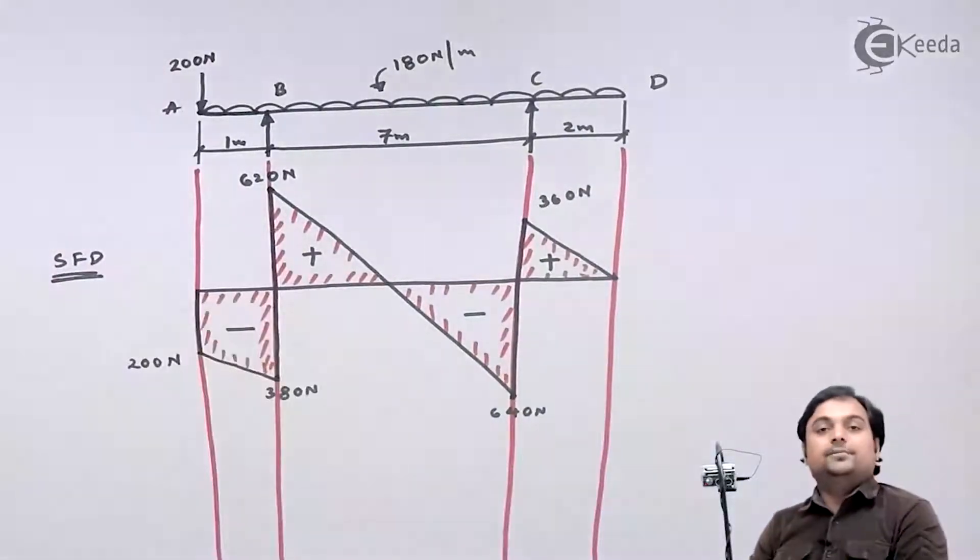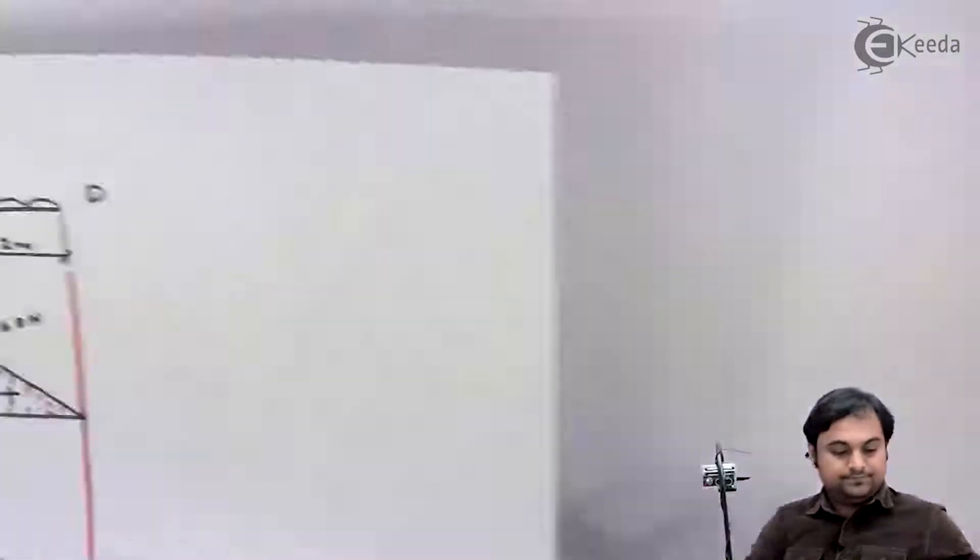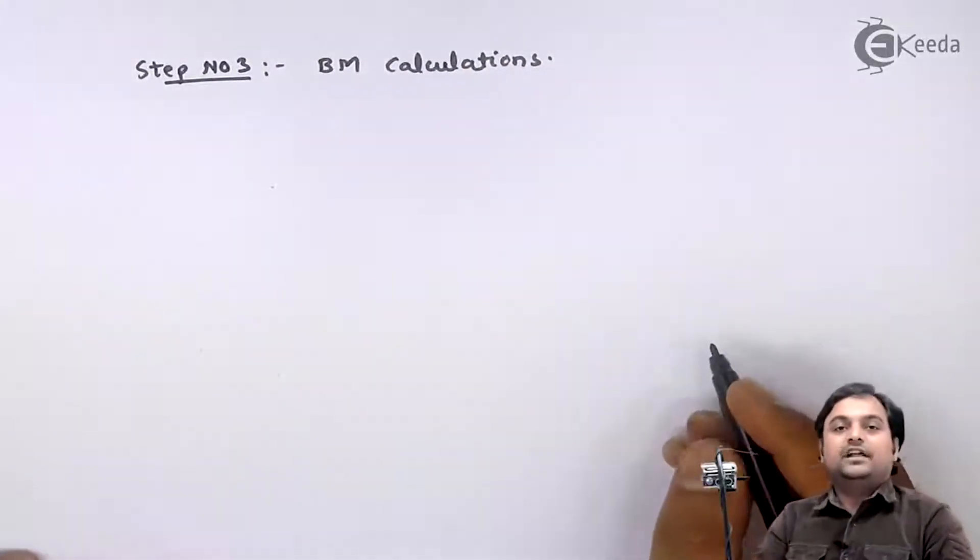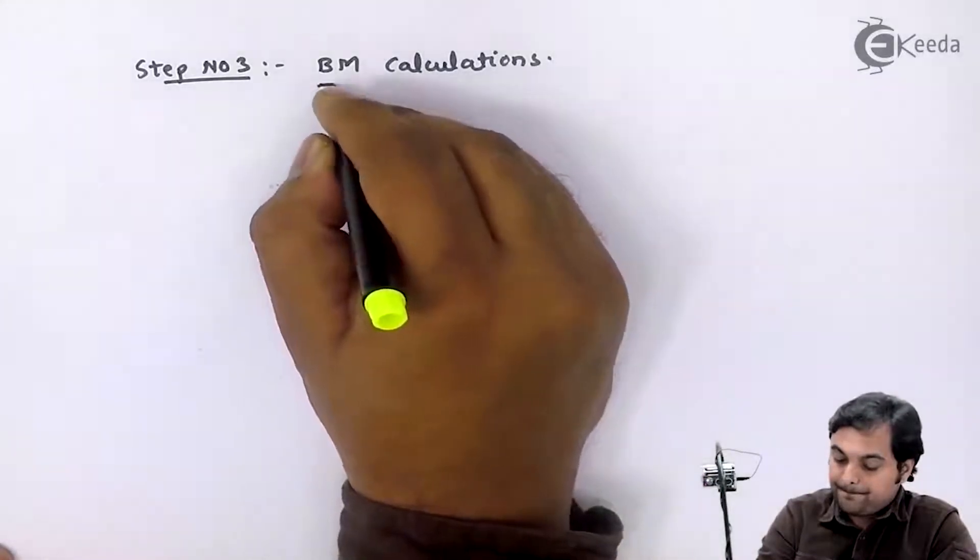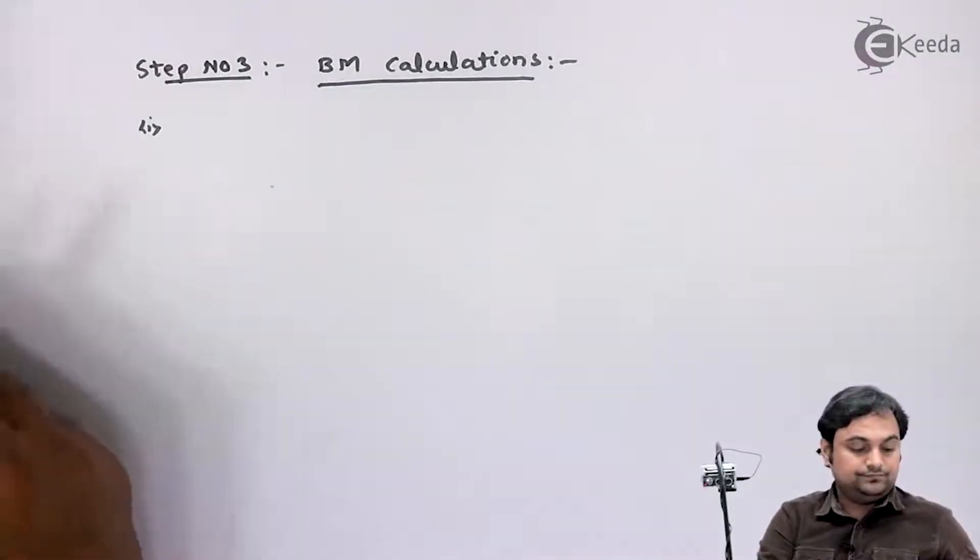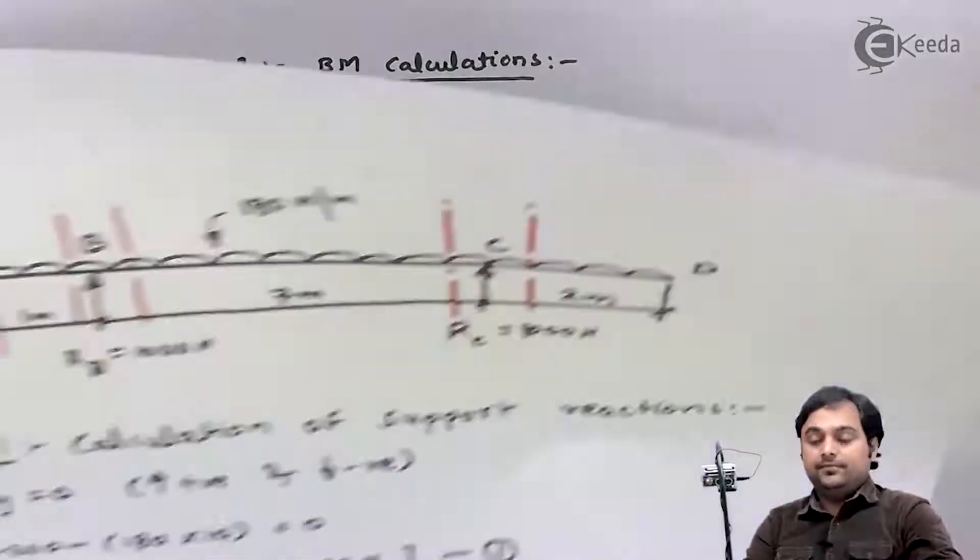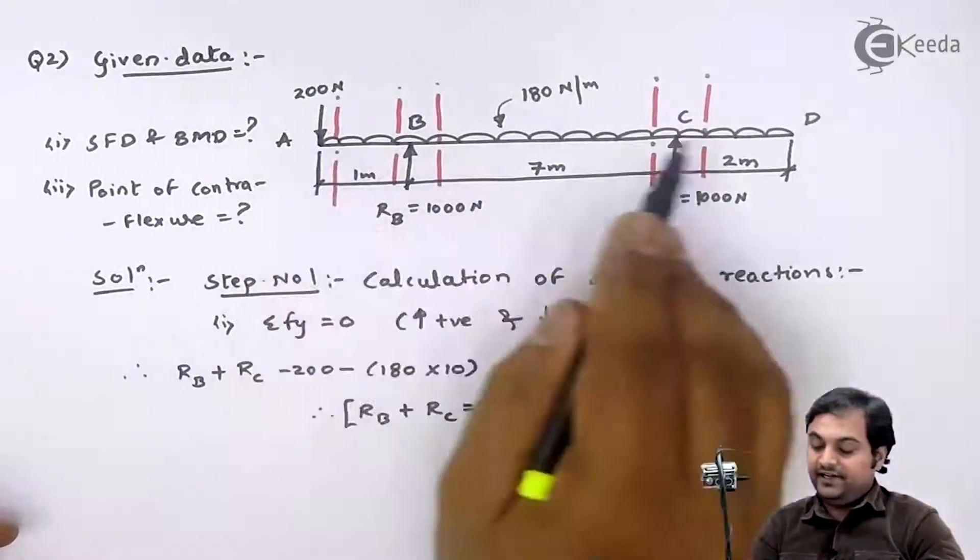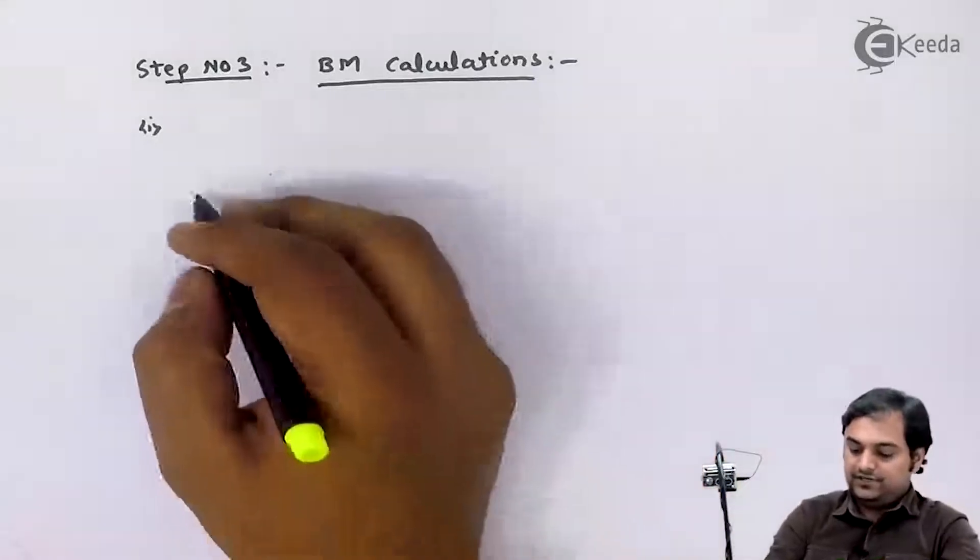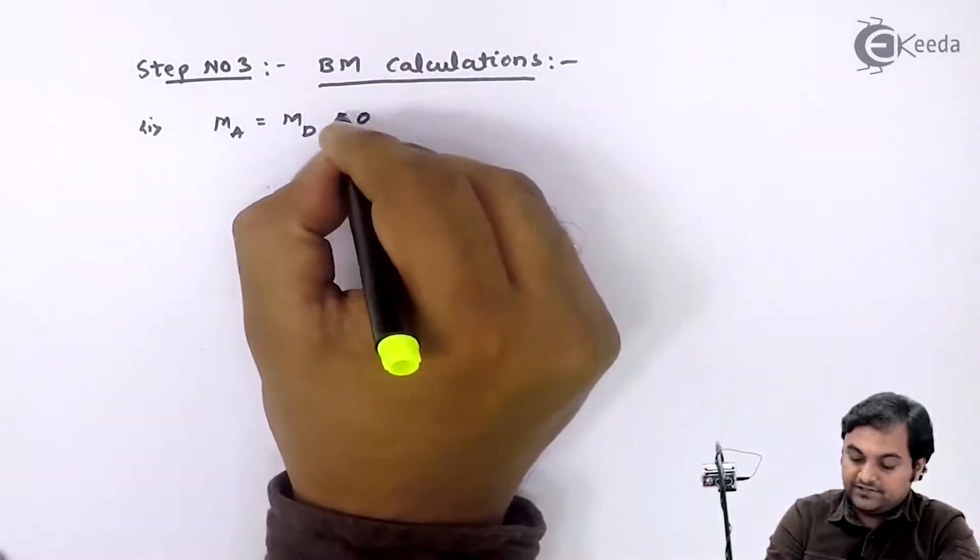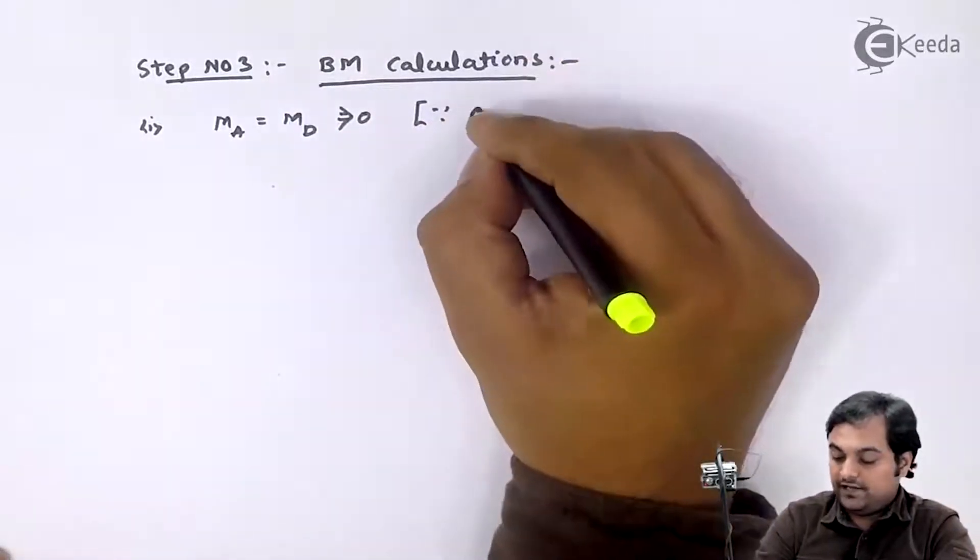Now after completing step number two, let us go on to step number three. Step number three is bending moment calculations. First, as we see here, the given beam is overhanging, so at the overhanging end A and D, bending moment will be zero. So first I'll write down moment at A equals moment at D, and that is zero, since overhanging beam.